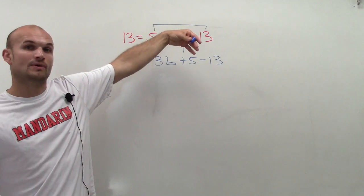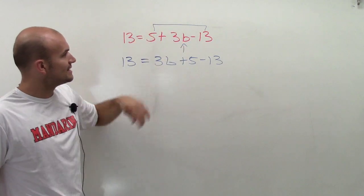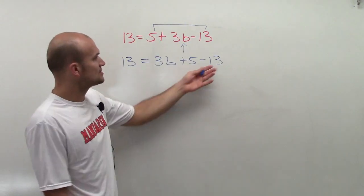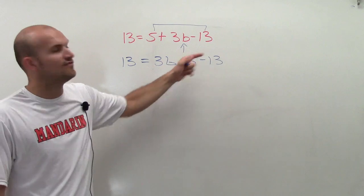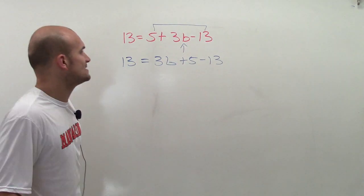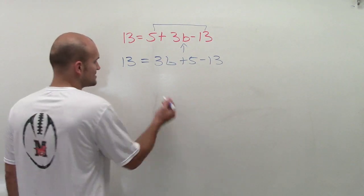It doesn't matter what order you add. So I can actually rewrite this, the 3b and the 5, I can rewrite them. So now it's easy for me to see, oh, 5 minus 13, well, that is negative 8, right?